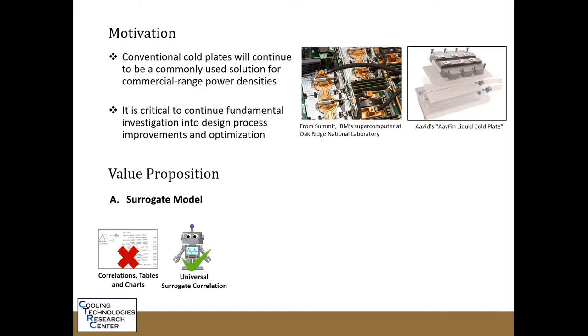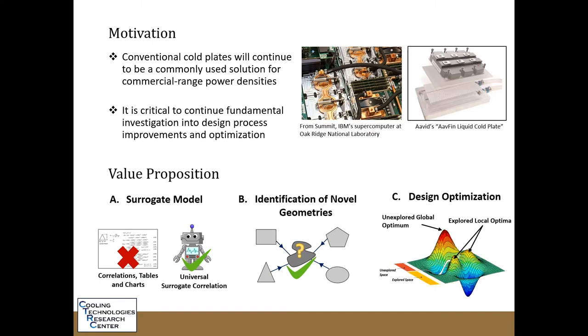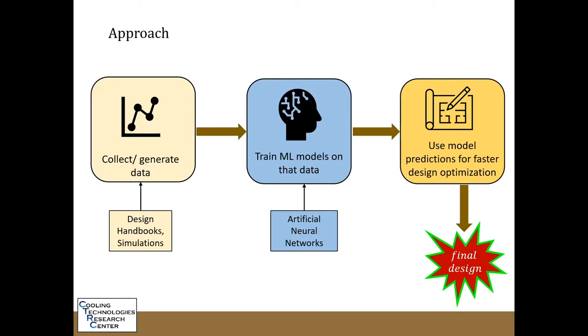First, we are working on making a surrogate machine learning model for predicting the fluid flow and heat transfer properties for any flow configuration. Second, once we have this model, we will be able to identify flow properties for geometries which haven't been documented yet. And third, we will use this model to improve the design optimization process by expanding the search domain and making the optimization process faster. To achieve the goals and objectives of the project, we have adopted the following approach. We have collected a lot of data pertaining to fluid flow properties and heat transfer properties for different flow configurations, and we have used this data to train machine learning models which are currently being used to search for high performance cold plate surface designs.